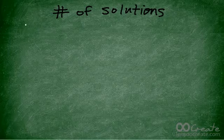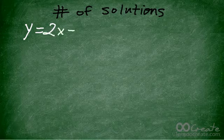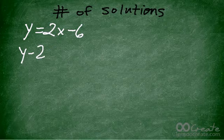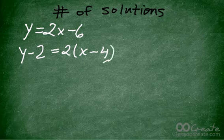So let's look at this example. We have y equals 2x minus 6, and y minus 2 equals 2 times the quantity x minus 4.